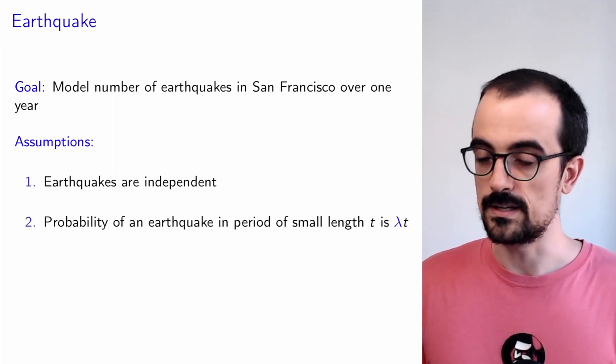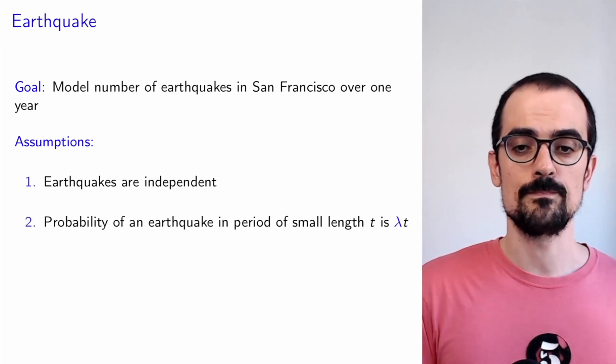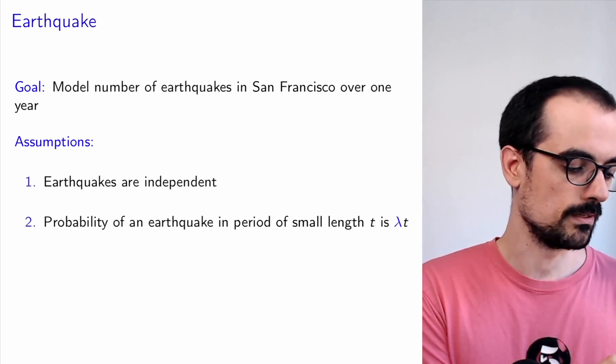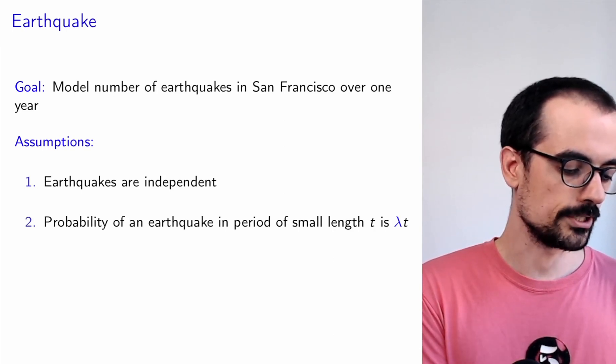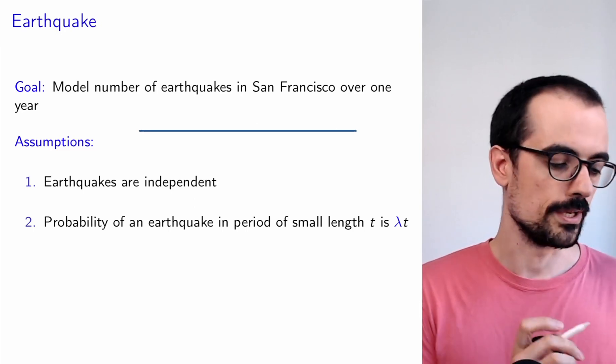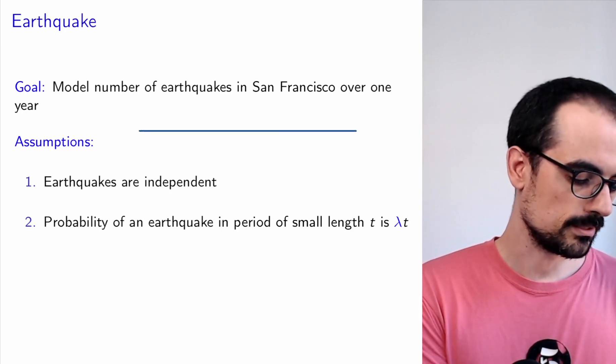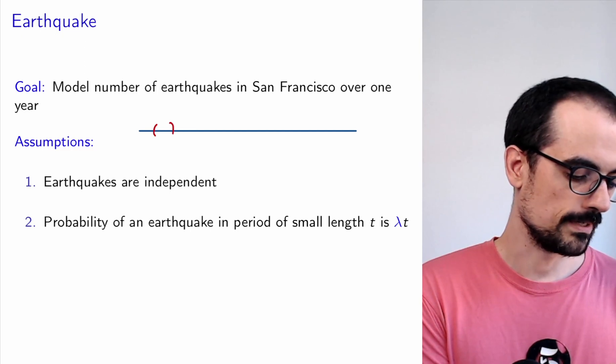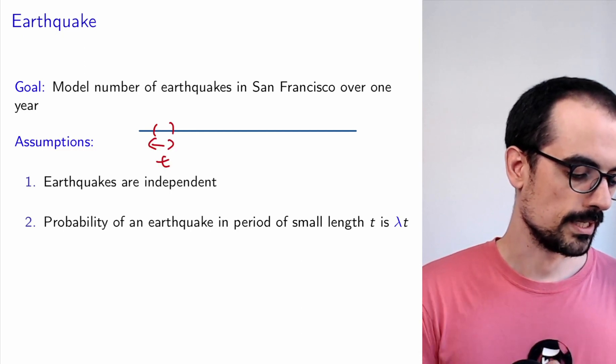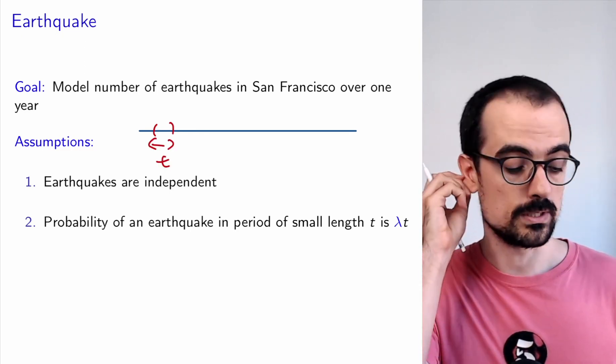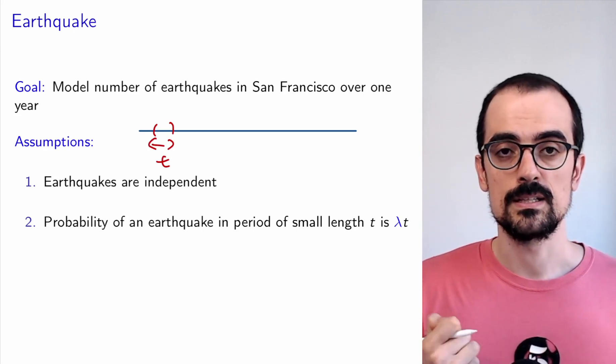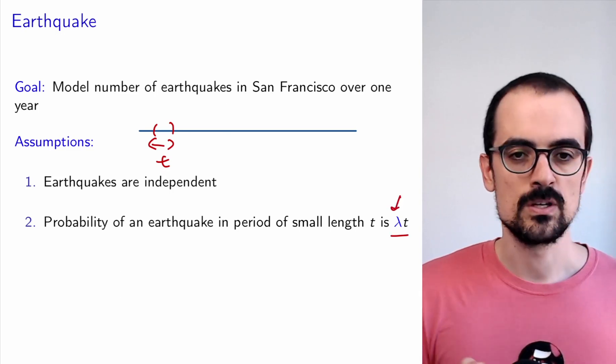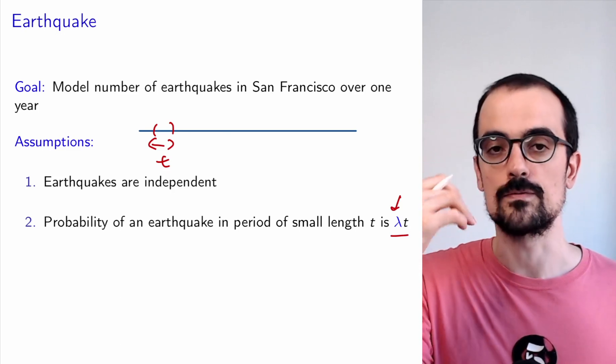Second, if we look at the probability of an earthquake in a period of small length t, that is going to be proportional to a constant lambda. What do we mean by that? Imagine that this is a whole year, and now you look at a certain interval of a few days. You look at a certain interval of length t. What we're saying is that when t becomes quite small, the probability is approximately equal to lambda times t, where lambda is a constant, which you can interpret as earthquakes per time, as number of earthquakes per time.